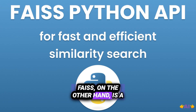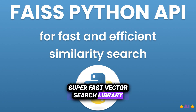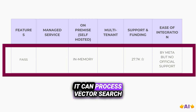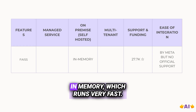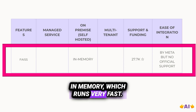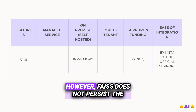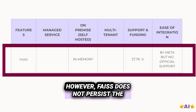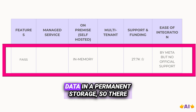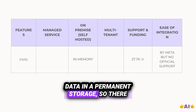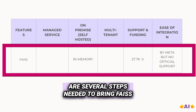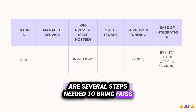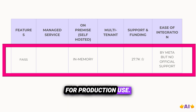FAISS, on the other hand, is a super-fast vector search library. It can process vector searches in memory, which runs very fast. However, FAISS does not persist the data in permanent storage, so there are several steps needed to bring FAISS into production use.